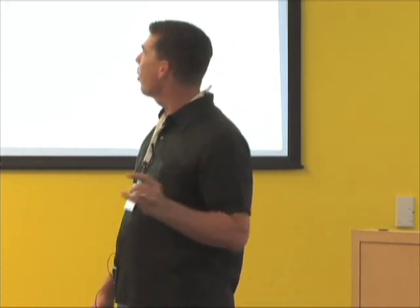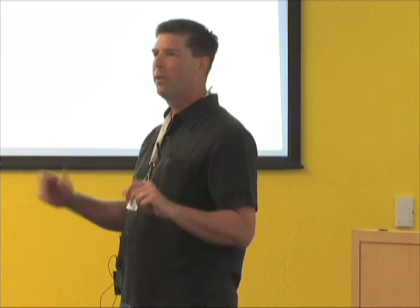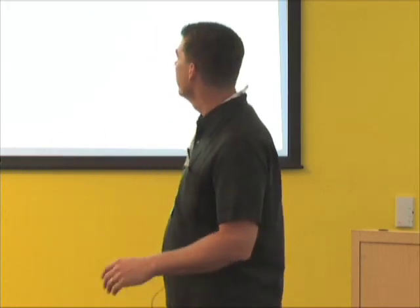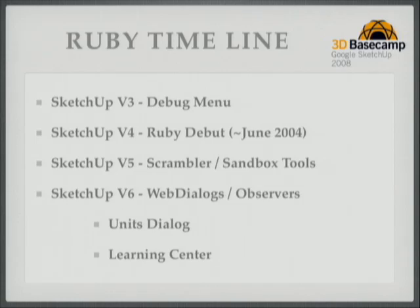In June 2004 I put down the woodworking tools and was sitting at the computer every day. In version 5 the Scrambler came out — we can now encrypt Ruby scripts — and the Sandbox tools came out courtesy of Tyler Miller. Then version 6: this is huge and still in its infancy as far as use. The user interface for Ruby scripts has broken all boundaries. We can do pretty much anything with web dialogues and observers. If you've gone into SketchUp 6 and seen the units dialogue or learning center, those are Ruby scripts with web dialogues — they look just like a real part of the program.